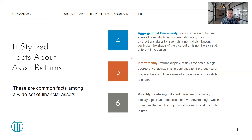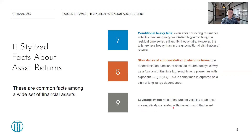Point five is intermittency: returns display at any timescale a high degree of variability, quantified by the presence of irregular bursts in time series of a wide variety of volatility estimators. Point six is volatility clustering: different measures of volatility display a positive autocorrelation over several days, quantifying the fact that high volatility events tend to cluster in time. Point seven is conditional heavy tails: one can correct the returns for volatility clustering using, for example, GARCH-type models.